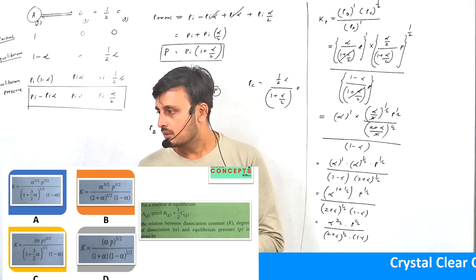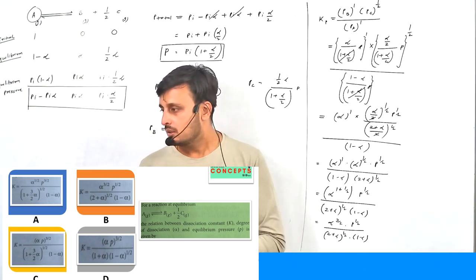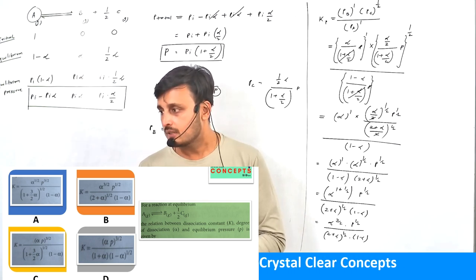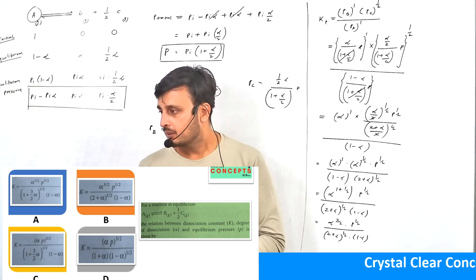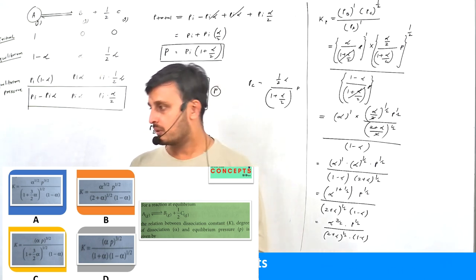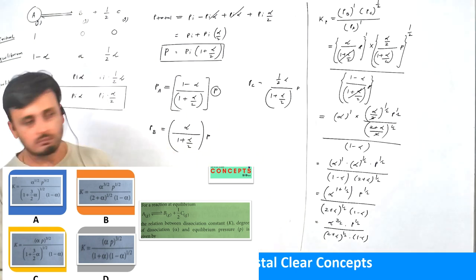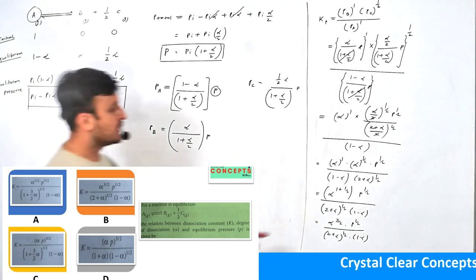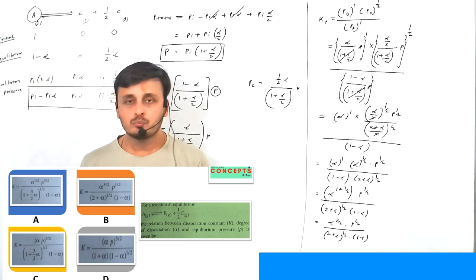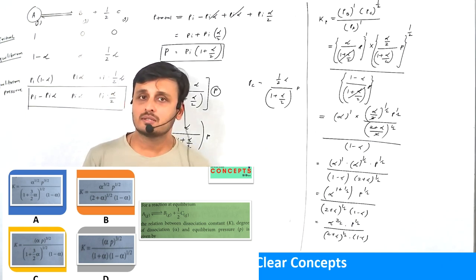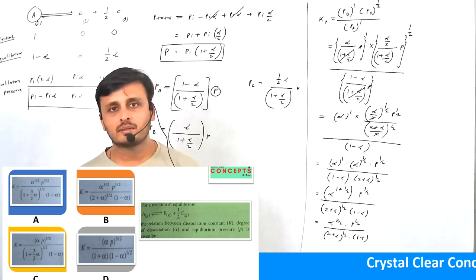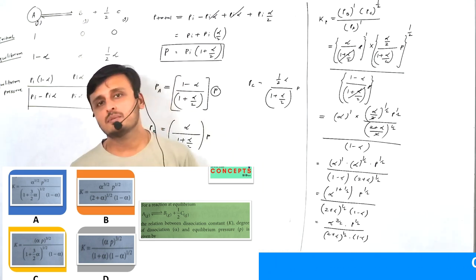The answer is option C — you can see that KP equals α raised to 3/2, times P raised to 1/2, divided by (2 + α) raised to 1/2, times (1 - α). This is how we solve such numerical problems. I hope you understand everything discussed. Keep watching this channel, you can subscribe. Thank you.